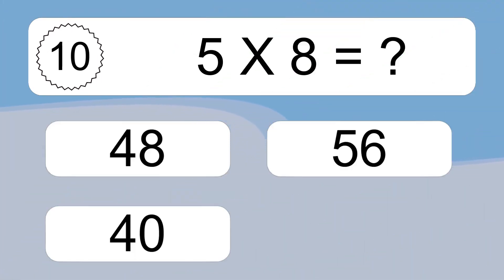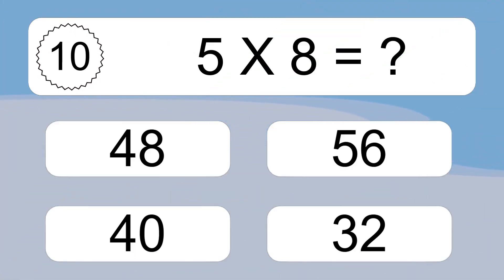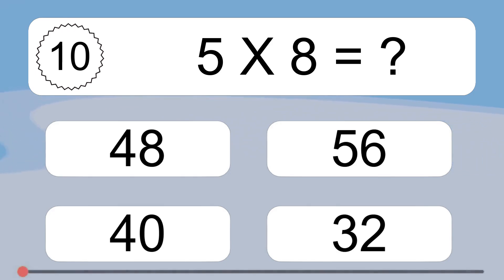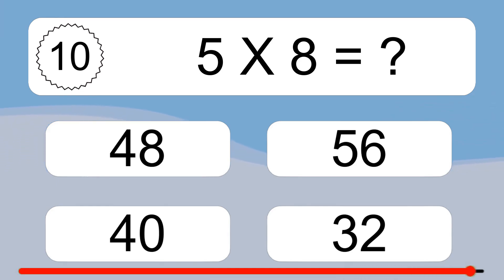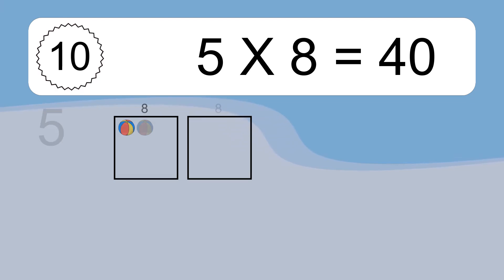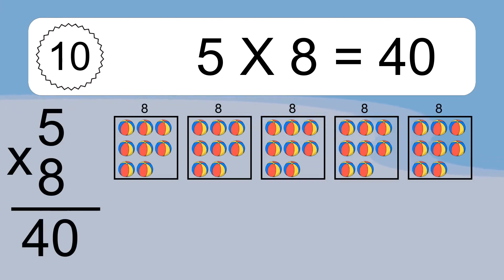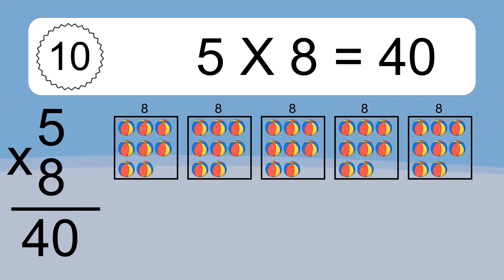5 times 8 equals what? 5 times 8 equals 40. We have 5 boxes, and each box has 8 colorful balls inside.